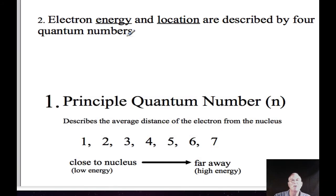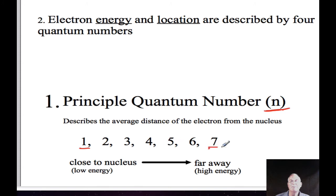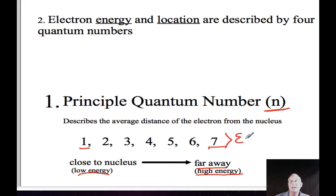The first is called the principal quantum number, with the symbol n. The principal quantum number describes the average distance of the electron from the nucleus. It is a number from one to seven, where one means the electron is close to the nucleus, moving slowly — a low energy electron — all the way out to seven, which represents an electron moving far from the nucleus, much faster, or high energy. These numbers one through seven are called the electron energy levels, so you'll hear us talk about an electron in the third or fourth energy level, corresponding to a principal quantum number of three or four.